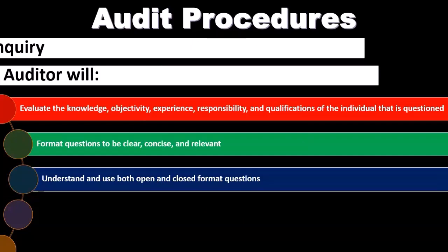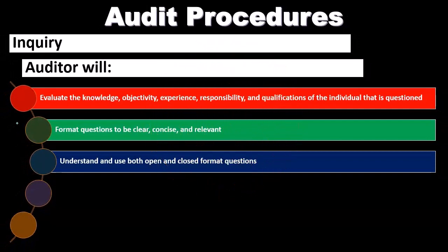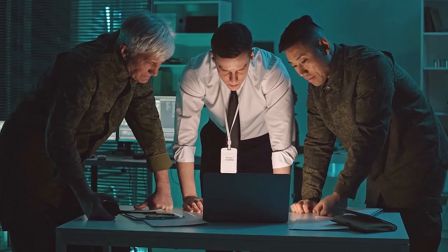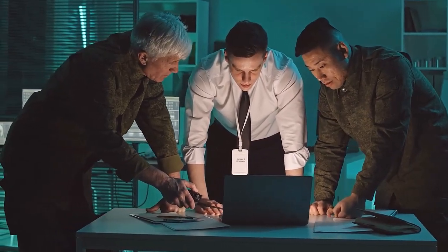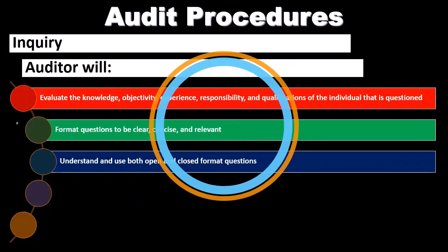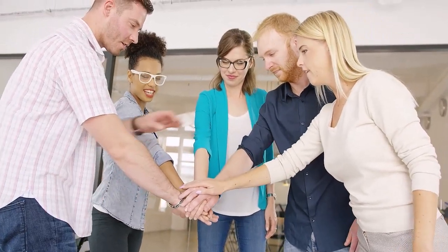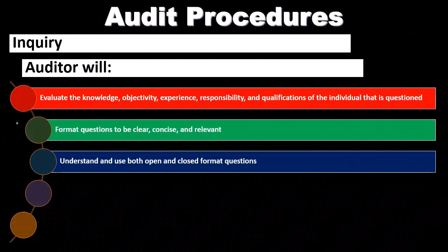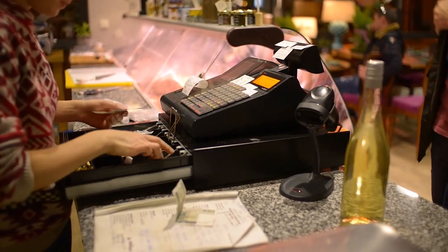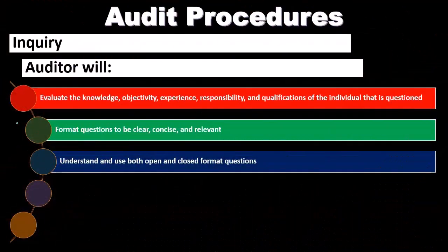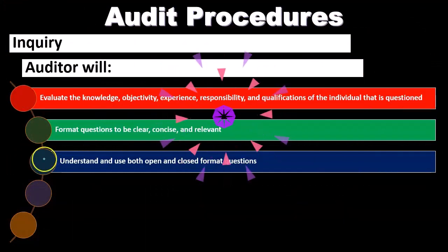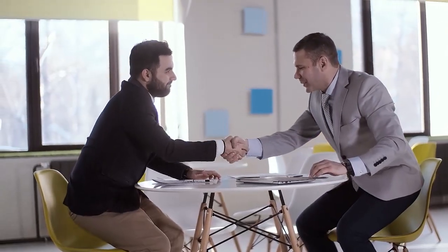We should understand and use both open and closed format questions. When we want broad knowledge about the environment or culture of the organization, we might ask more open questions — what does management think about internal controls, the auditing process, or the accuracy of financial statements? These are open-ended questions where someone can give a detailed answer. If we're asking about a specific type of process, we might use a closed question — a yes or no answer: do you sign off on this, do you need to get approval for this process? The answer is a straightforward yes or no.